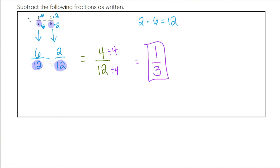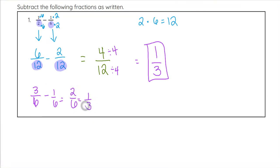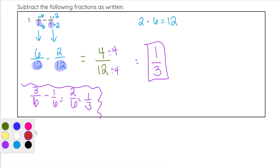Just like with the LCD method, where we got 6 as the denominator — giving us three sixths minus one sixth, which equals two sixths, simplified to one third — both methods give you one third. So you can use either method, whichever you are more comfortable with.